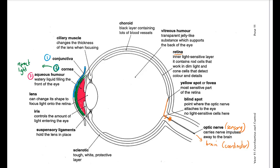After that, light travels past the iris, which is the colored part of your eye. When people say they have blue, brown, or green eyes, it's their iris that has that color. The iris has a very important job: it controls the amount of light entering the eye.